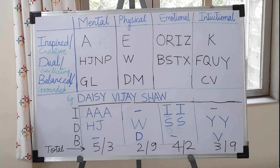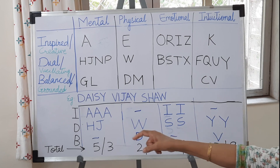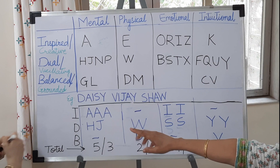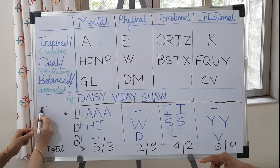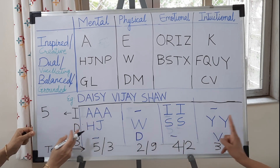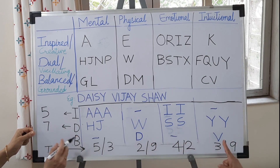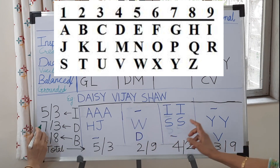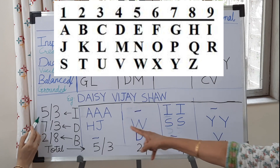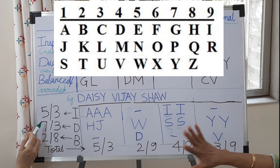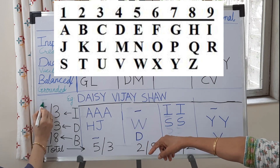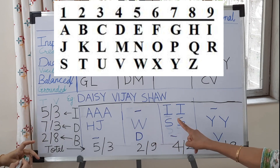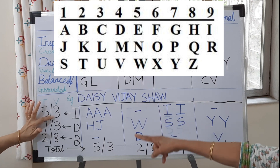Another aspect is to see how many inspired letters this person has, how many dual letters, and how many balanced letters — along with their values. Looking at the inspired letters: there are 3 plus 2, totaling 5 letters. The dual letters total 7. And there are 2 letters in the balanced group. Now calculate their values. For inspired: 1 plus 1 plus 1 is 3, then 9 plus 9 is 18, so 18 plus 3 equals 21, which reduces to 3.